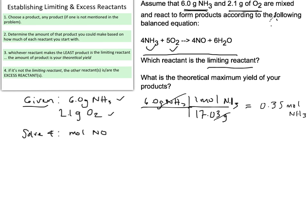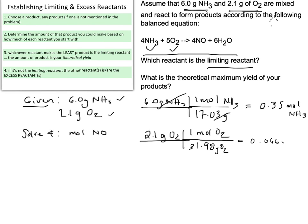Now we need to do the exact same thing for our other given, which is 2.1 grams of O2. Once again, we're converting into moles, so we divide: 1 mole of O2 divided by 31.98 grams of O2. This gives us 0.066 moles of O2.